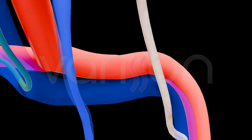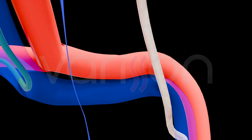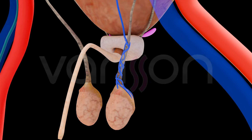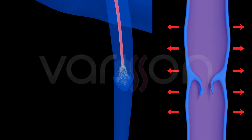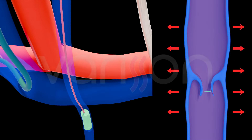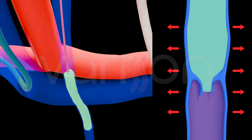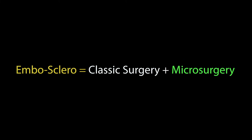In the Embosclero procedure, the foam sclerotherapy applied to the varicocele causes the veins to dry out and vanish — the same effect as a microsurgery operation that would normally take hours. The glue treatment applied to the vein causing the varicocele closes off that vein, eliminating the root cause, which is the same outcome as in classic varicocele surgery. In conclusion, the Embosclero method achieves the same results as both classic surgery and microsurgery, all in a single session and without the need for surgery.